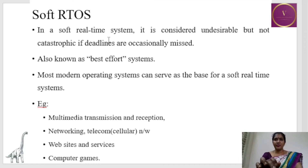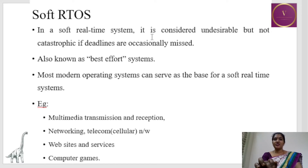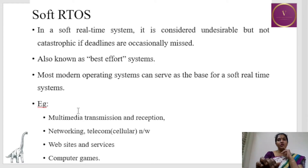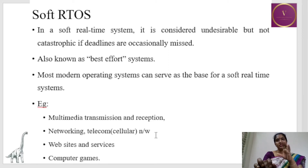Soft real-time operating system: it is considered undesirable but not catastrophic if deadlines are occasionally missed — the damage is relatively less if a requirement is not met on time. It is also known as a best-effort system, and modern operating systems can serve as the base for soft real-time systems. Soft real-time systems are used in multimedia transmission and reception, networking, telecommunication networks, websites and servers, and computer games.